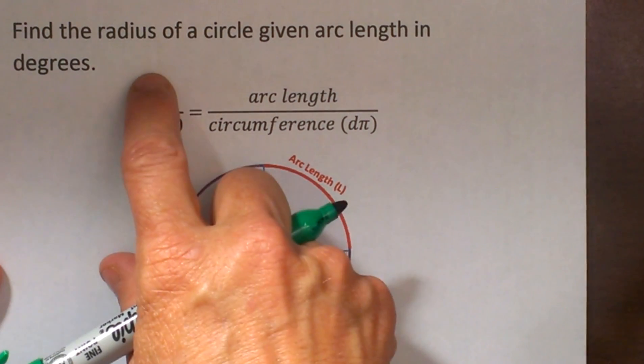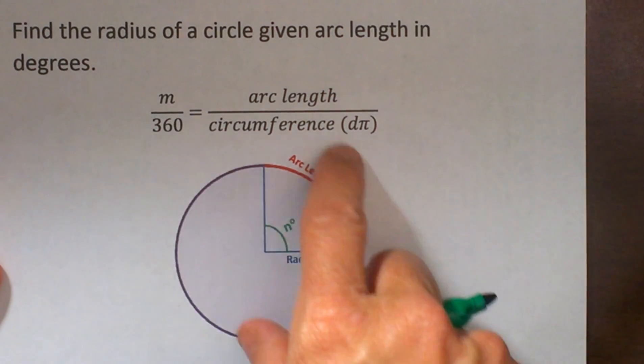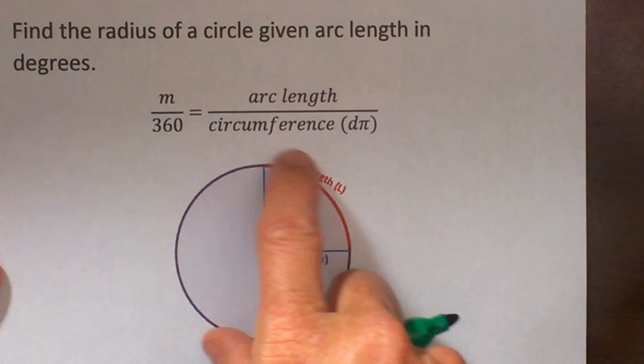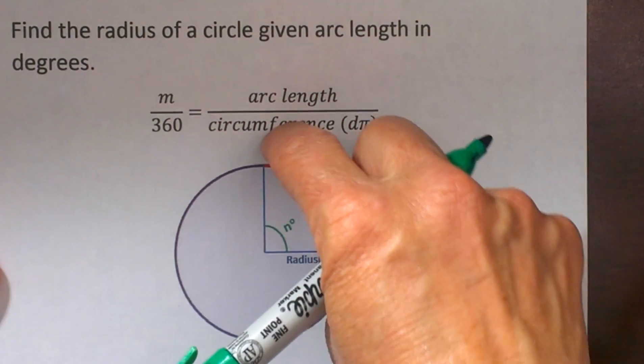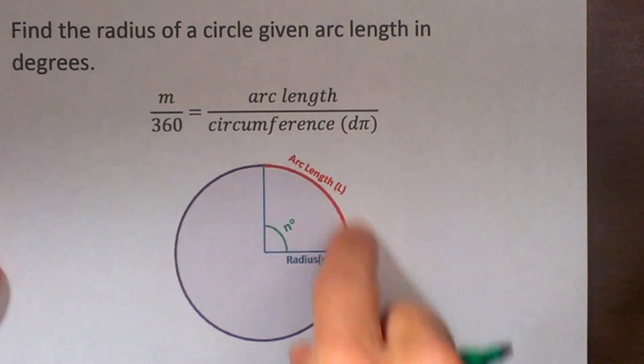...over the degrees in a circle which is 360, and that is equal to the same proportion as the arc length is, so the fraction is to the entire circumference of the circle.